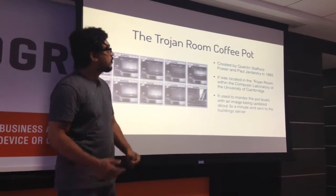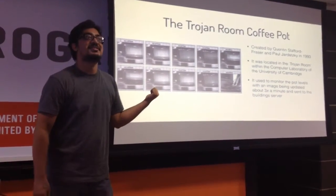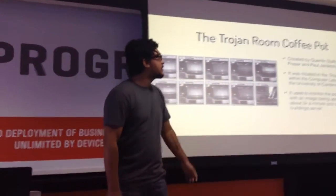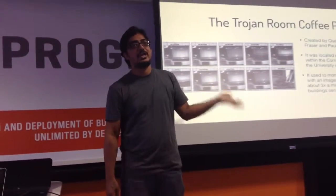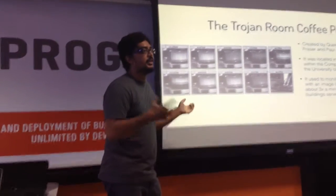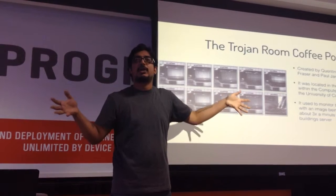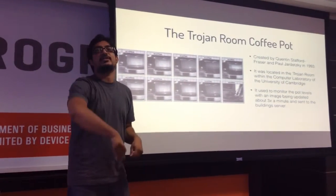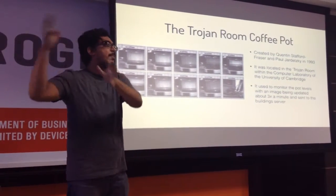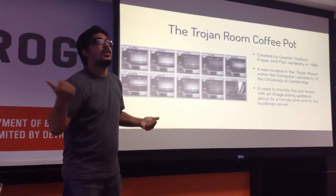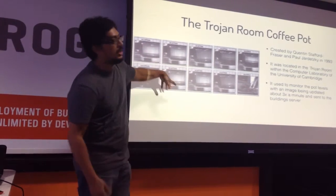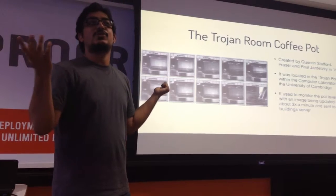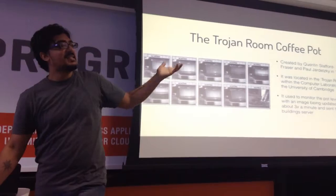Another example is called the Trojan Room Coffee Pot. This was developed at the University of Cambridge in 1993 — the first use case of web technologies when Tim Berners-Lee created the web page. What they had was a coffee pot in the Trojan Room inside their computer lab. Whenever the coffee pot was empty somebody had to go refill it, so they did remote monitoring by taking three pictures every minute and uploading to the server. You guys thought IoT was five or ten years old — it's been there since 30 years.